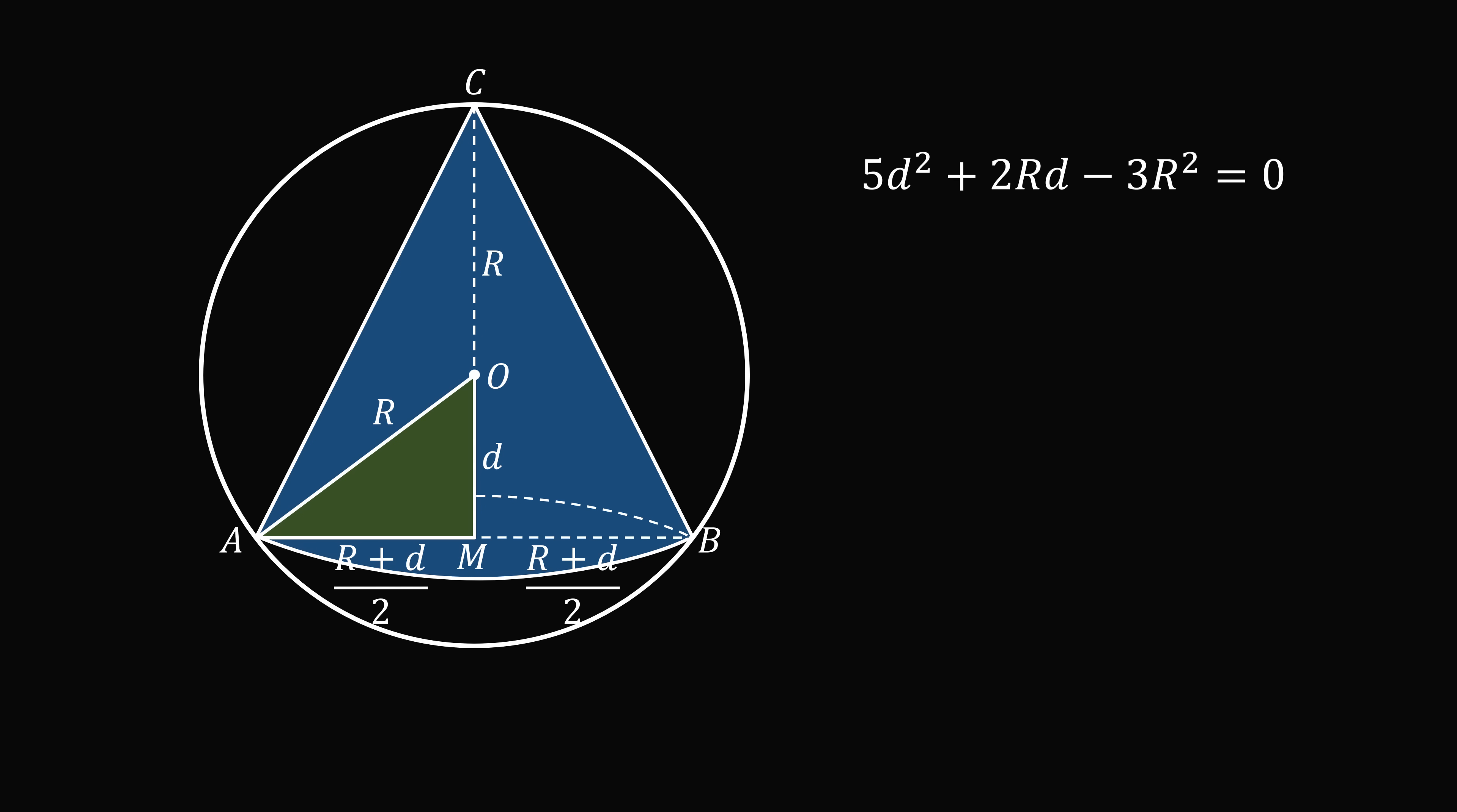We will solve this equation for d. We can try to factor. So we have 5d squared and negative 3R squared. So it could be factored as 5d minus something multiplied by 3R plus something. So in order to force 5d squared and to get 3R squared, we would need to have 5d minus R multiplied by 3R plus d.